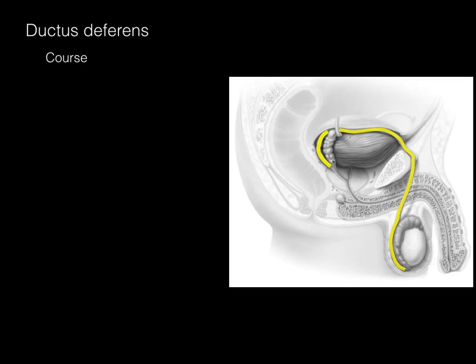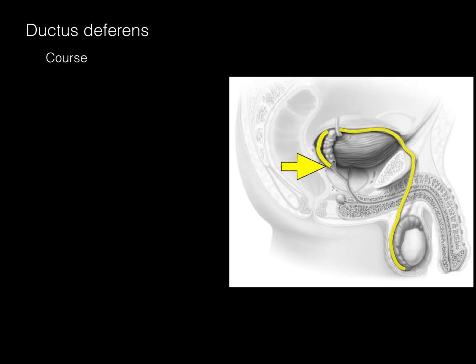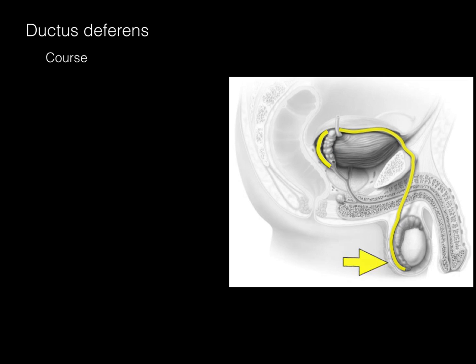The ductus deferens originates from the epididymis, a structure that houses developing sperm on top of the testes. It then courses all the way up the spermatic cord, through the inguinal canal, and to the back of the bladder, where it joins with the seminal vesicle. Its function is to transport sperm during emission and ejaculation — basically to bring sperm forward and prepare for ejaculation during intercourse.